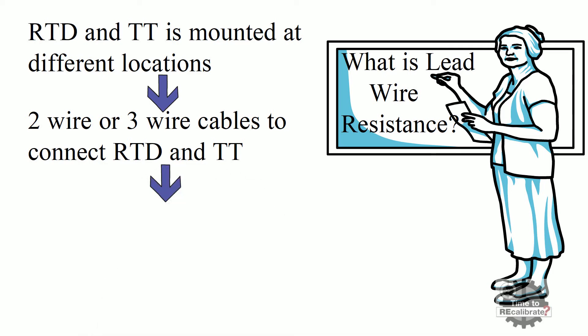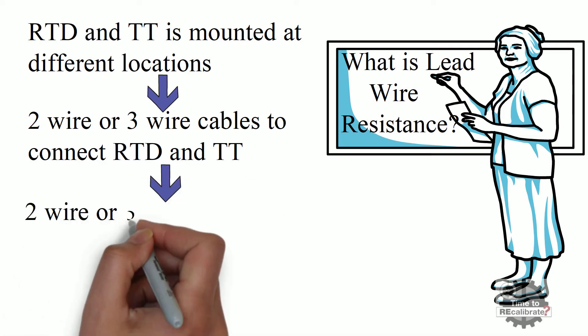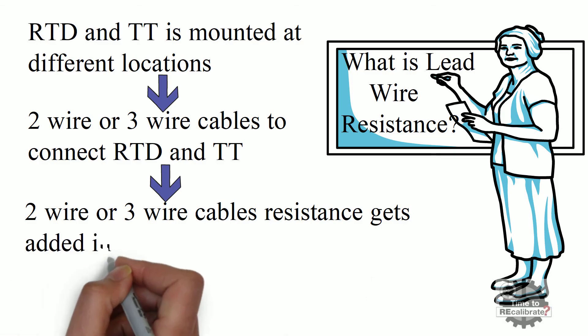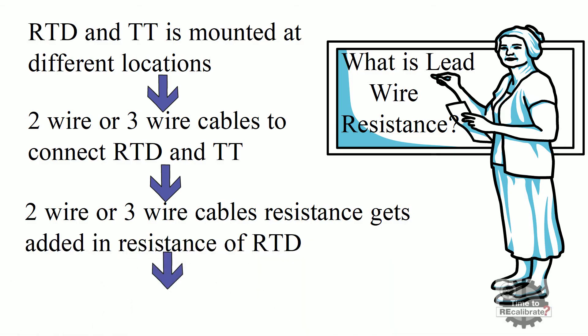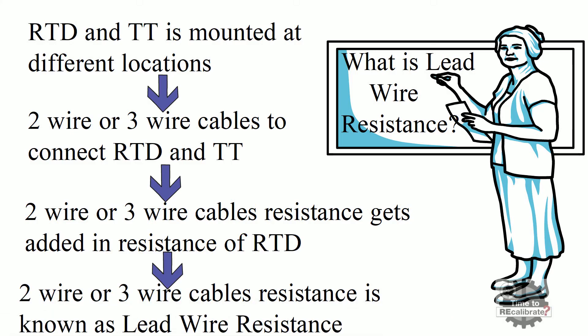These 2-wire or 3-wire cables have their own resistance, which gets added to the resistance of the RTD. These cables' resistance is known as lead wire resistance. These lead wires produce measurement error in temperature reading, which I am going to explain in the next slide.